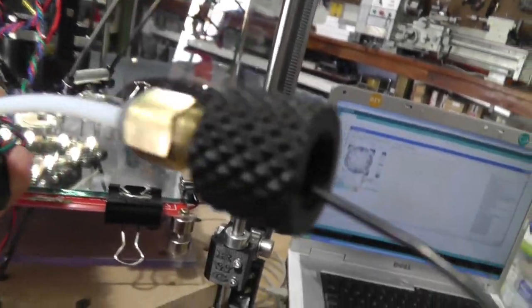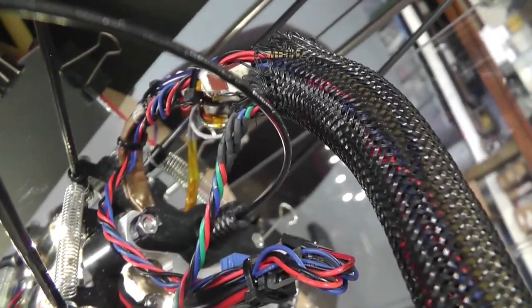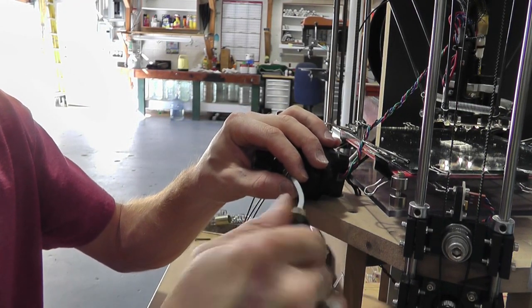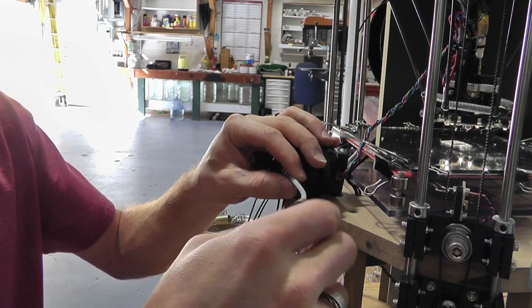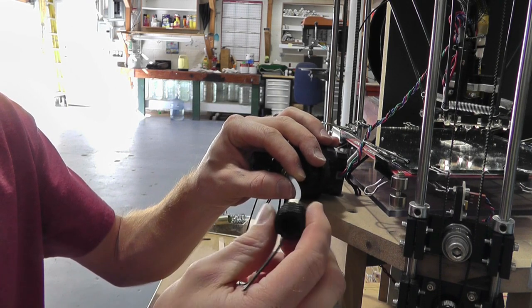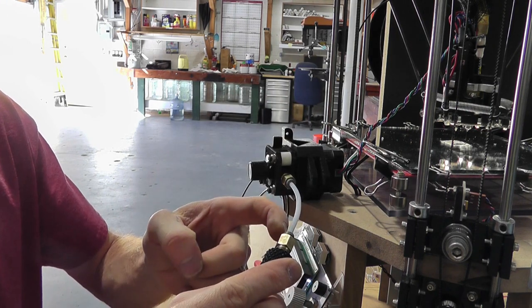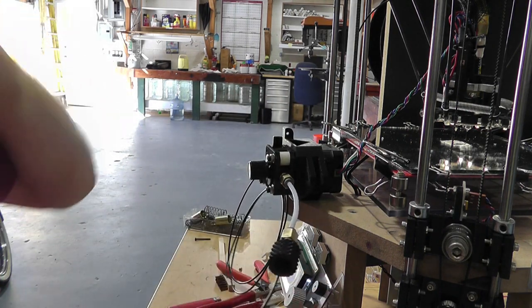I went ahead and left this interesting threaded fitting here, which threads on the top of there. And that's so I can actually turn this freely on this tube, and it doesn't come off the tube. And it's very difficult to get the tube off. So I'd rather do it that way.